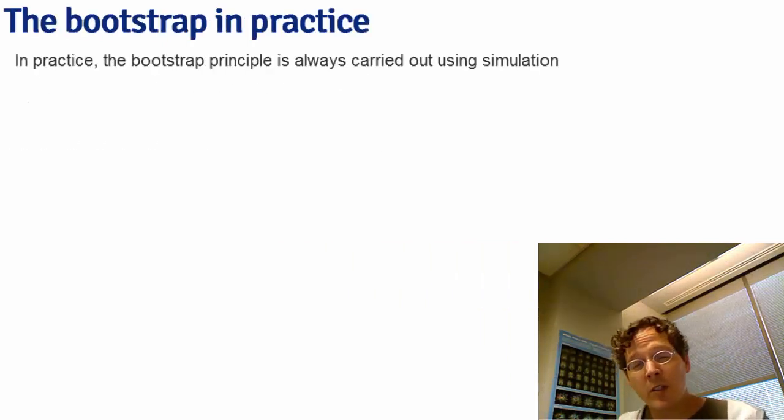The Bootstrap Principle actually doesn't require simulation, in the same way that if we want to know what's the distribution of the average of 50 die rolls, we could maybe mathematically figure that out. Good luck. But it's easier to do that with simulation. So we never figure out what you get when you roll the die infinitely many times because we can approximate that so well with Monte Carlo.